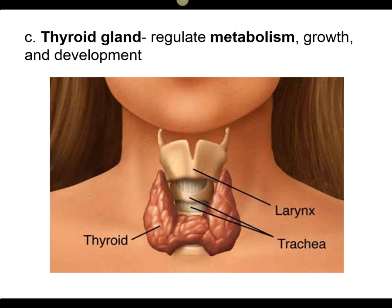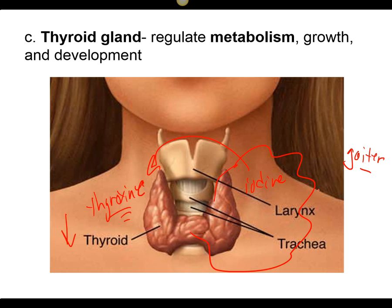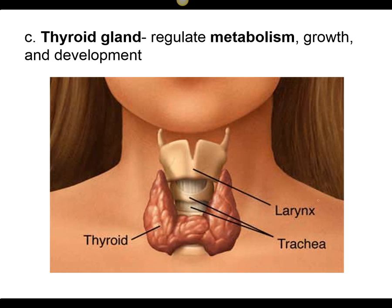The thyroid gland — has anybody known someone with a weight problem because of a thyroid problem? Either hyperthyroidism or hypothyroidism. The thyroid produces thyroxine, your metabolic hormone. If you don't have iodine to produce thyroxine, the thyroid starts to swell and makes a goiter — that big swelling on the side of your neck. So the thyroid regulates your metabolism; you can have either too much or too little.